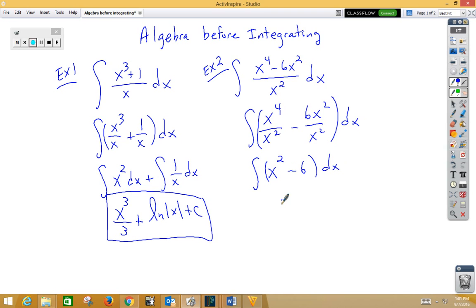Integrating separately we get x cubed over 3 minus 6x plus c. Don't forget your plus c.